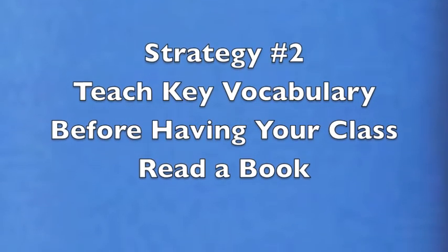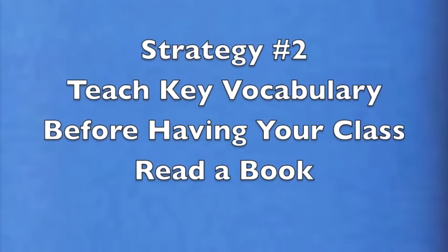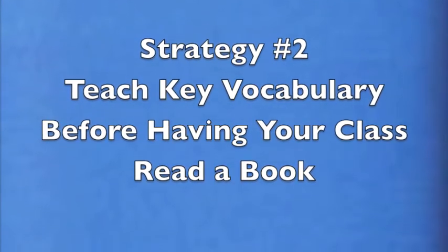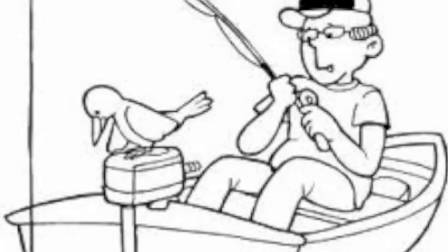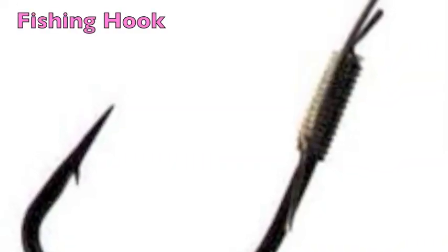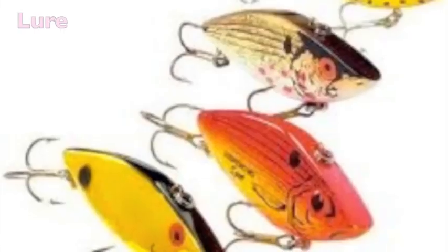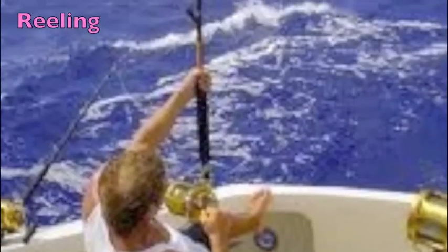The second strategy is to teach key vocabulary before having your class read a book. For example, if you were to read a book about fishing, you would want to teach key vocabulary beforehand, such as: what is a hook? Or what is a lure? Or what is reeling?